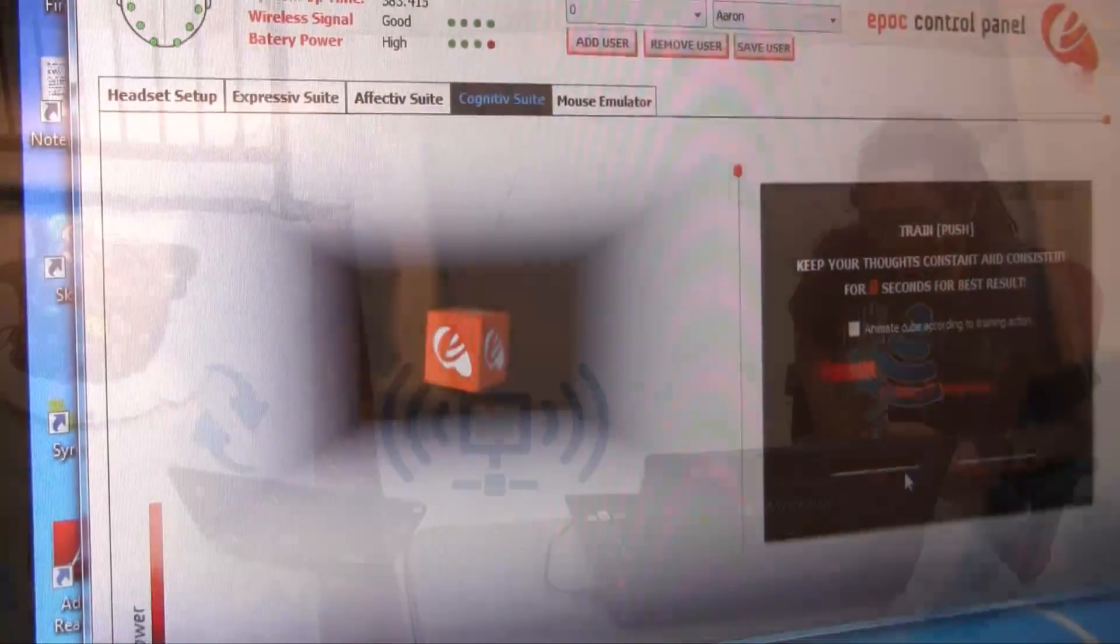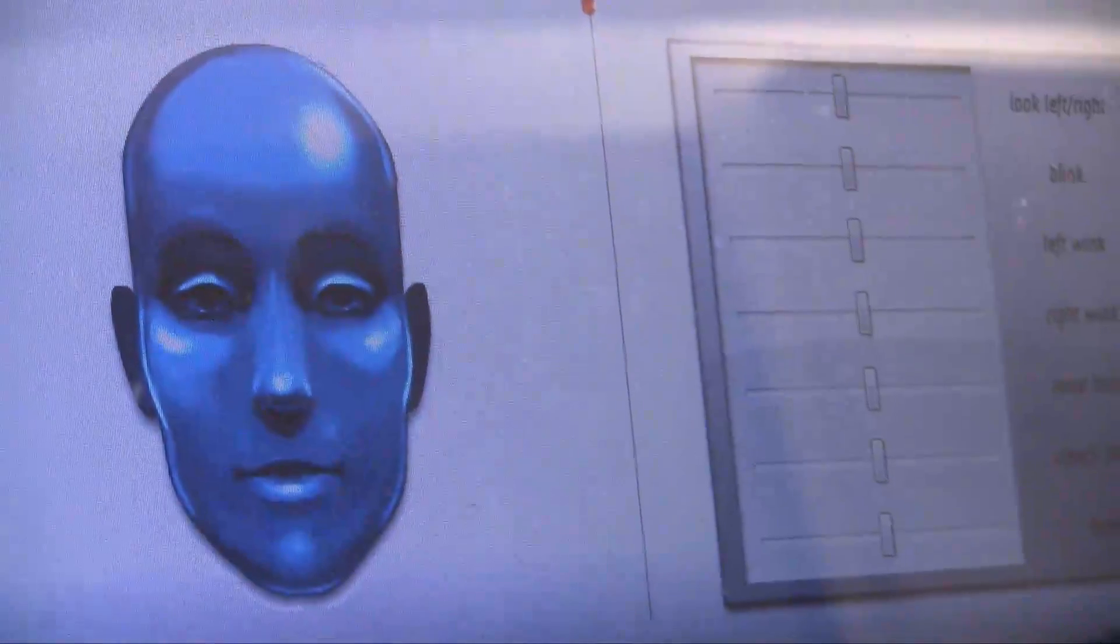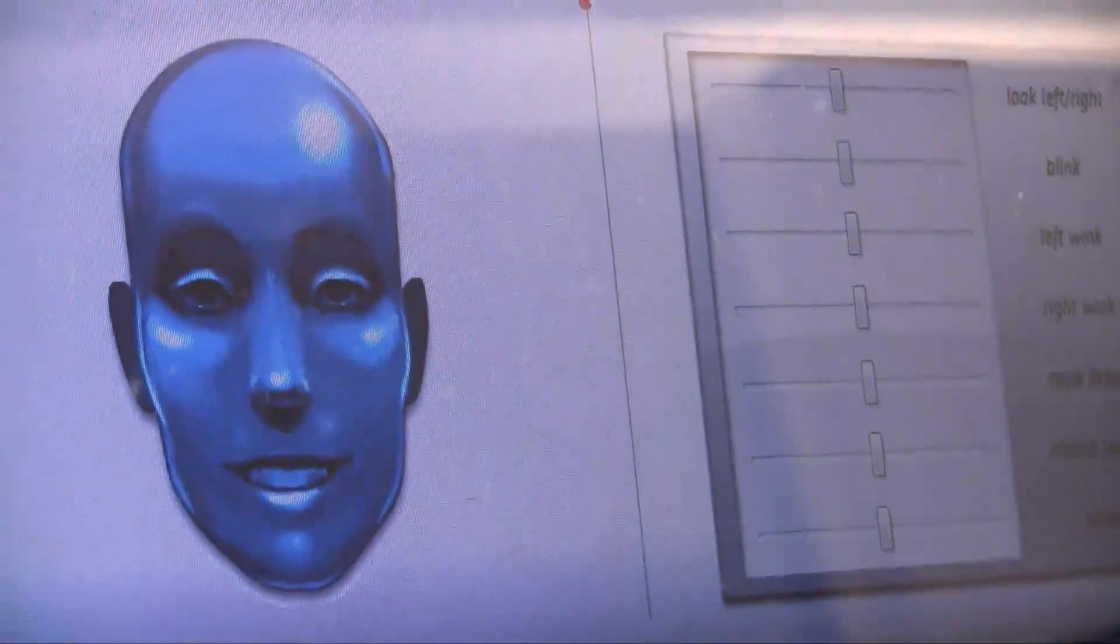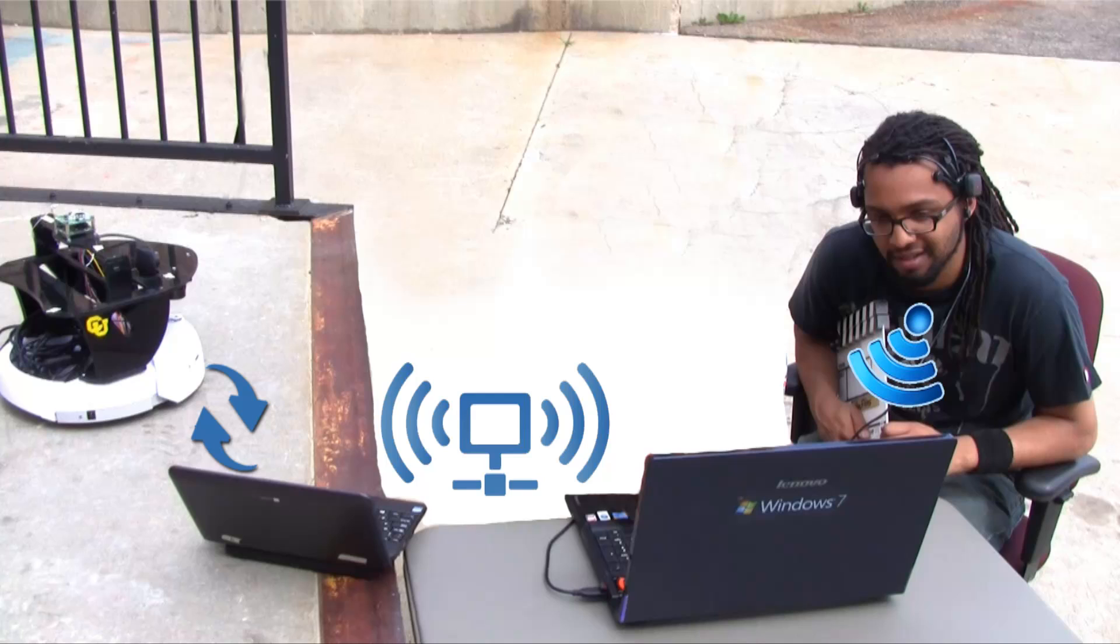Before any control over the robot can be interpreted, the user needs to train their brain signals against the learning algorithms to control digital objects. Once a set of commands is trained, the user can save their custom settings.